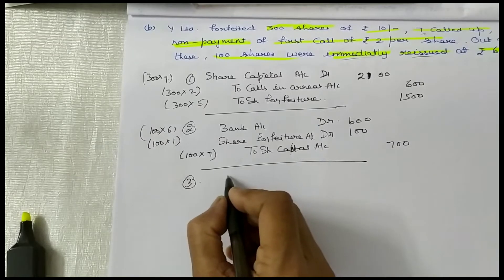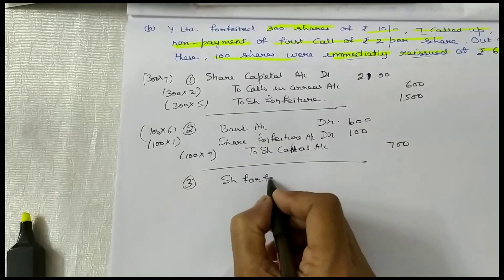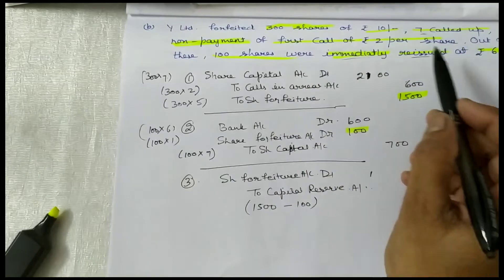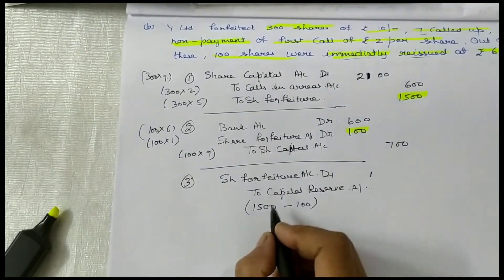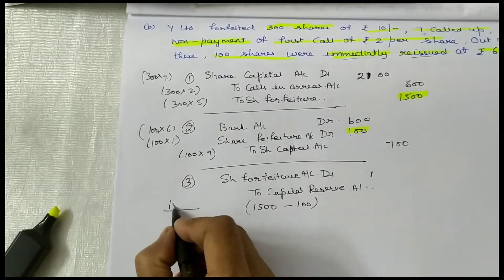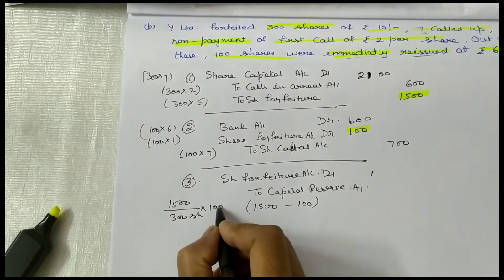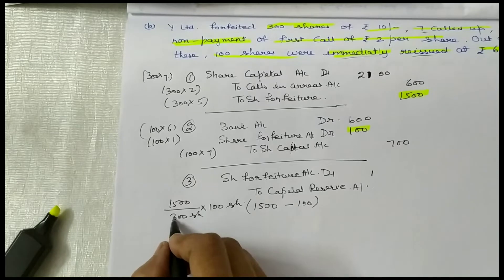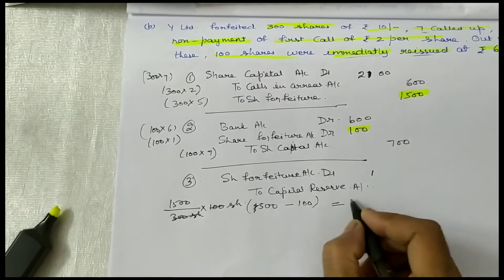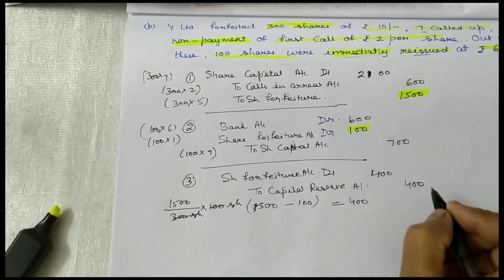You have to transfer balance to capital reserve — share forfeiture account debited. You have forfeited 300 shares and out of these 100 shares are reissued, so you have to apply the formula. 1,500 is on 300 shares, and on 100 shares, share forfeiture credit equals 1/3 of 1,500, which is Rs.500. Rs.500 minus Rs.100 equals Rs.400. Rs.400 is transferred to capital reserve.